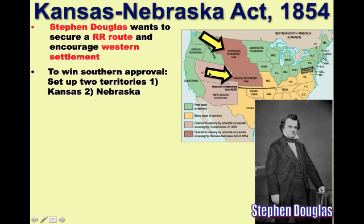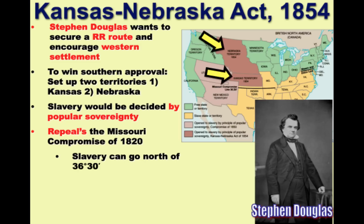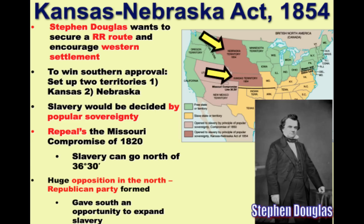Douglas also wants to encourage Western settlement. But Southerners won't approve any railroad route in this area because it would be north of 36°30', meaning slavery would not be allowed there. So, in order to win Southern approval, he introduces a bill into Congress called the Kansas-Nebraska Act. It would set up two territories — Kansas and Nebraska — and the issue of slavery would be decided by popular sovereignty. This causes a huge political firestorm because the Kansas-Nebraska Act repeals the Missouri Compromise of 1820, saying that potentially slavery can go north of 36°30'. Northerners oppose the Kansas-Nebraska Act in huge numbers. The Whig Party falls apart, the Republican Party is formed, because for Northerners this act opened up slavery to an area that previously it was closed off to.